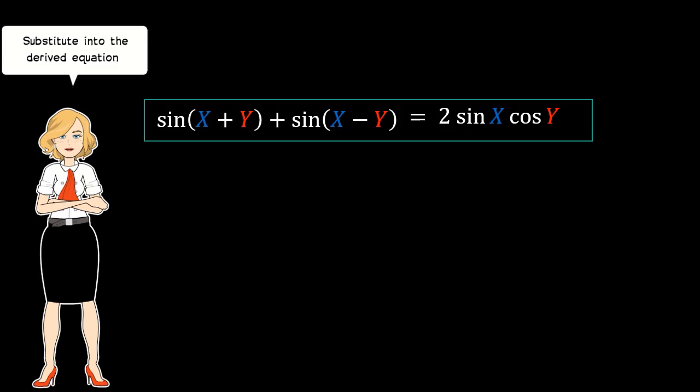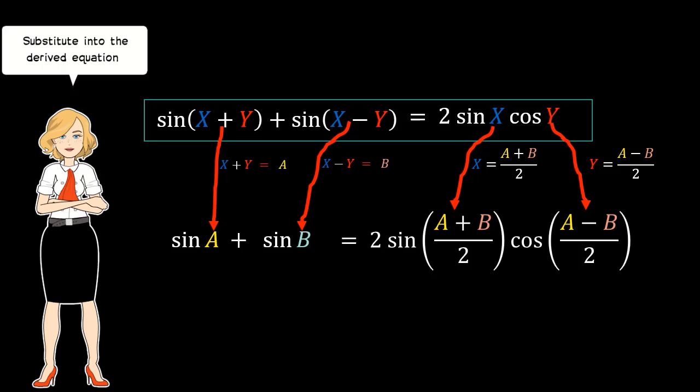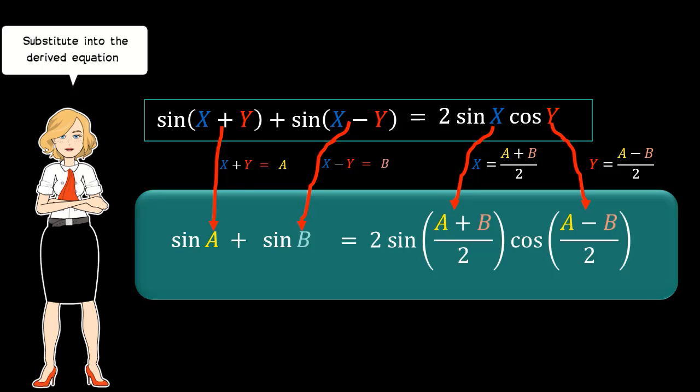We substitute all these formulas into the derived equation. Therefore, we substitute x+y with a, x−y with b, x with (a+b)/2, and y with (a−b)/2. So we have derived our first Factor Formula.